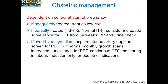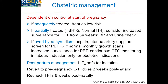If patients are adequately treated, we treat them as low risk. If they're partially treated with TSH high but free T4 normal, we consider increased surveillance for preeclampsia from 34 weeks onwards. If patients have overt hypothyroidism around time of conception, we put them on aspirin from 12 weeks onwards, arrange 23-week uterine artery Doppler, and increased screening for preeclampsia and growth. In the postpartum period, we ask them to revert to the pre-pregnancy dose two weeks postnatally, as increased TBG levels persist for a few weeks after delivery, with thyroid function rechecked at the six-week postnatal visit.